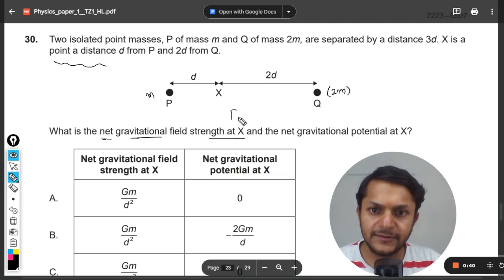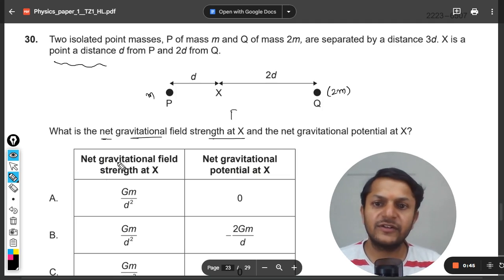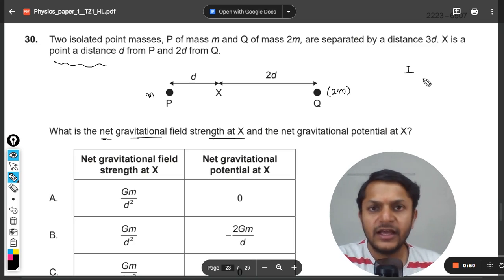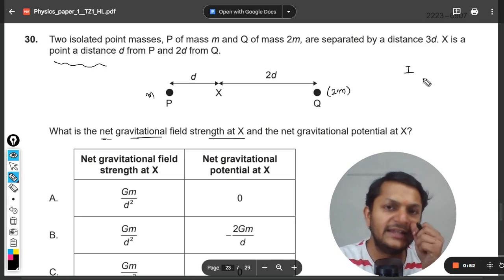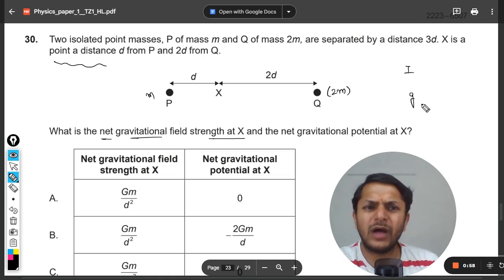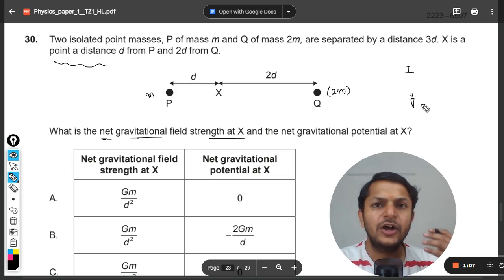My dear students, I prefer writing it as I and I call it gravitational field intensity, but your books in IB are just calling it g. So I don't like calling it g because g is actually the acceleration due to gravity. Although these two things are similar to each other, they have exactly the same values.